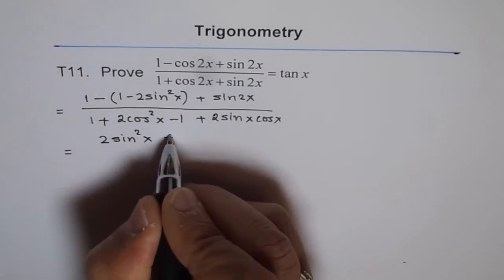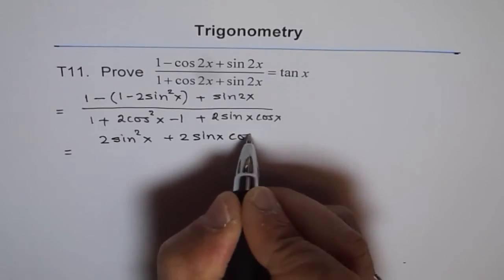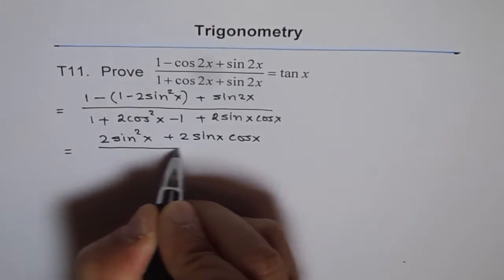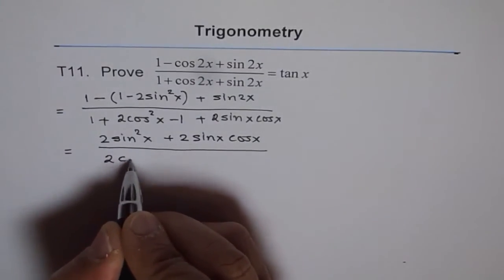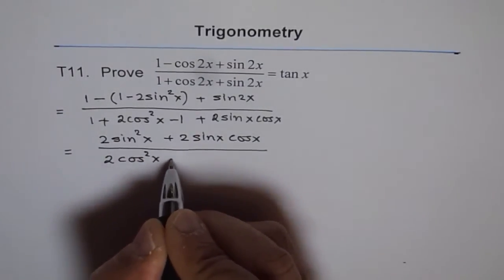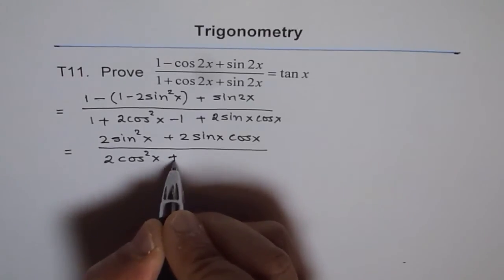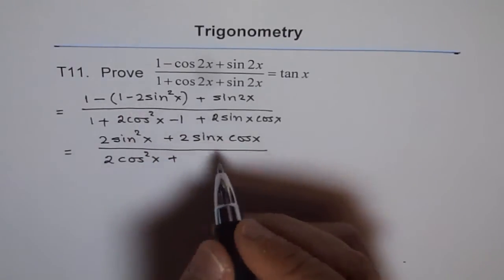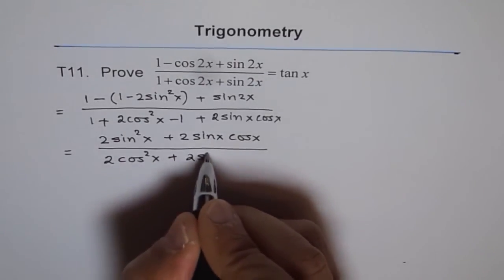And I will now expand this as 2 sin x cos x divided by, so 1 minus 1 is 0, so we get 2 cos square x plus. So this was plus 2 sin x cos x.